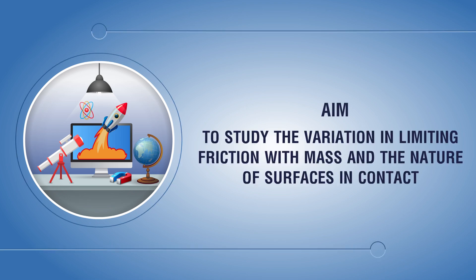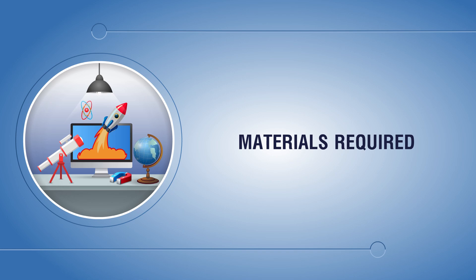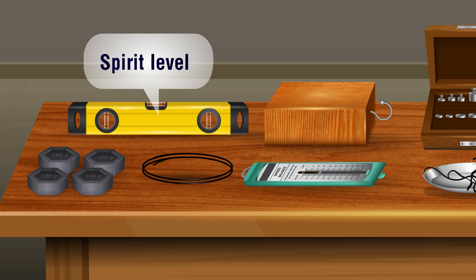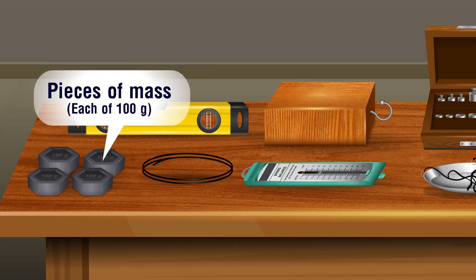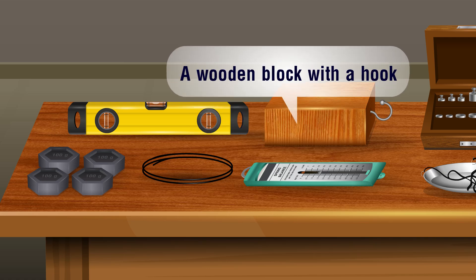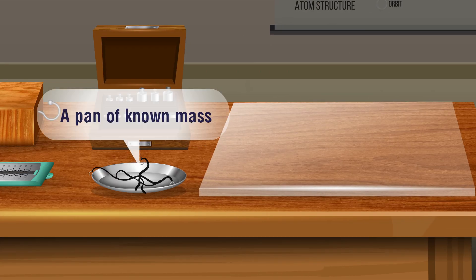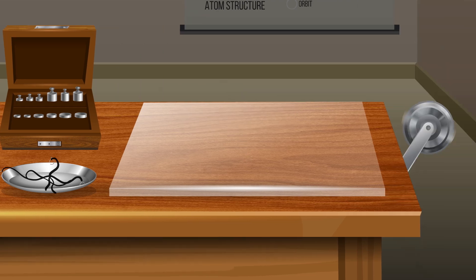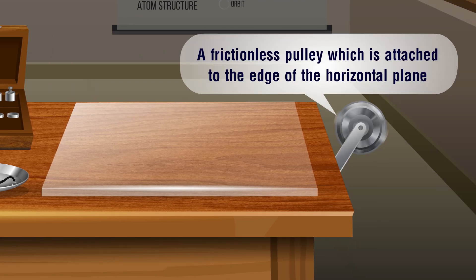We aim to study the variation in limiting friction with mass and the nature of surfaces in contact. Materials required: spirit level, pieces of mass each of 100 grams, string, spring balance, a wooden block with a hook, a pan of known mass, weight box, glass top, and a frictionless pulley attached to the edge of the horizontal plane.